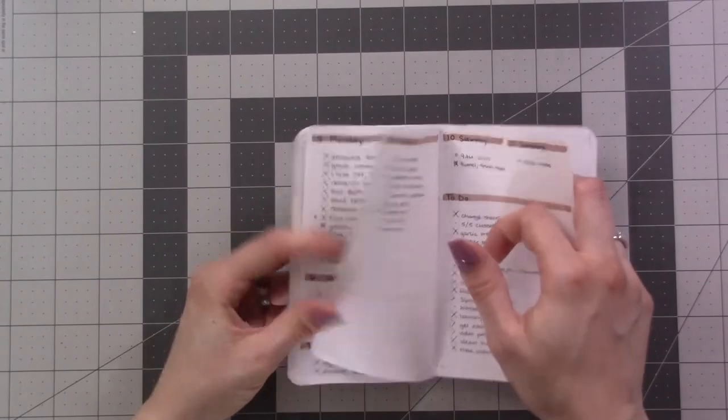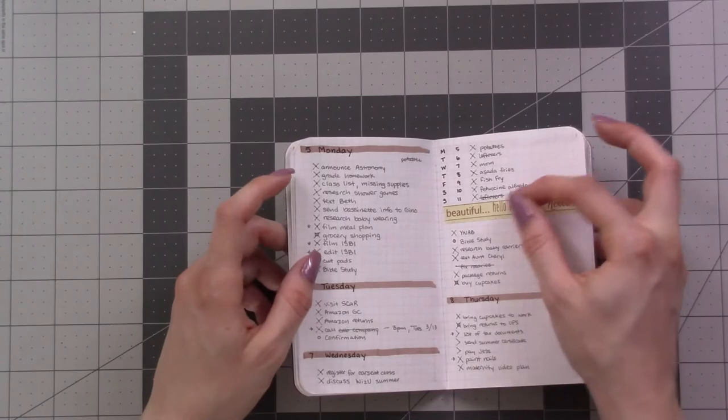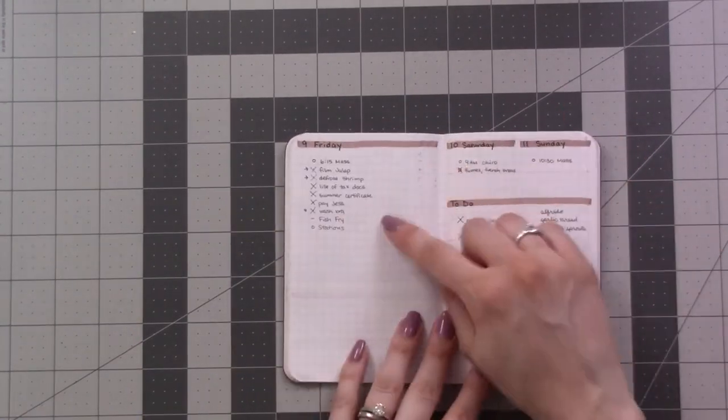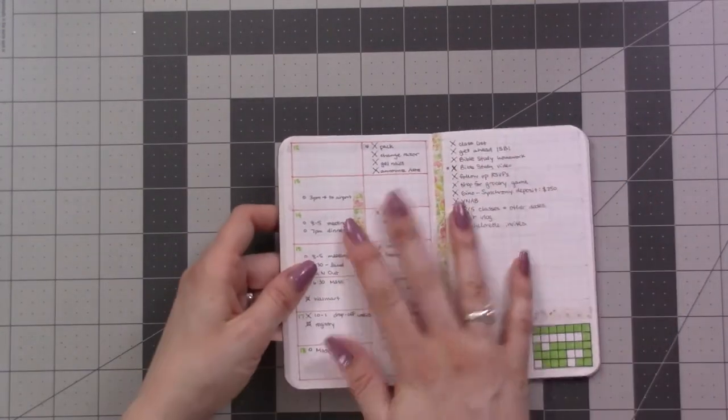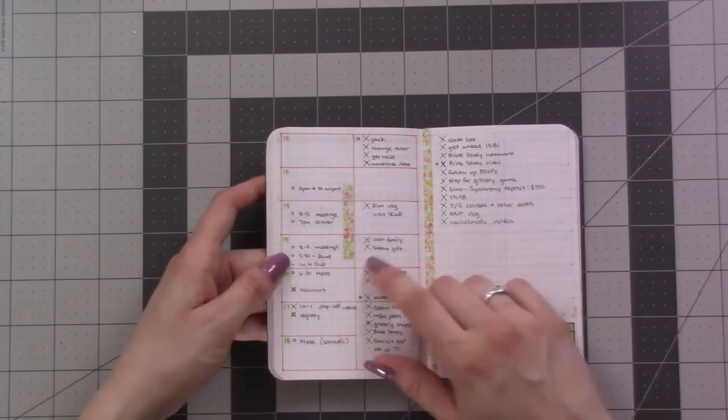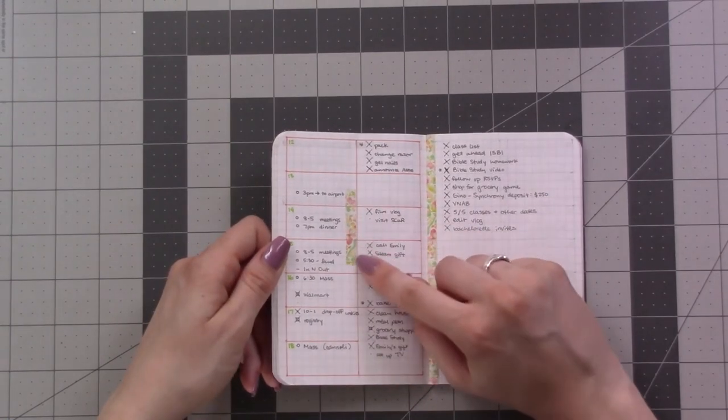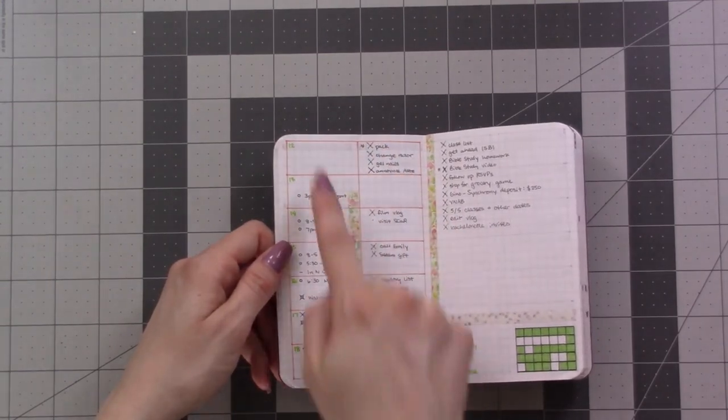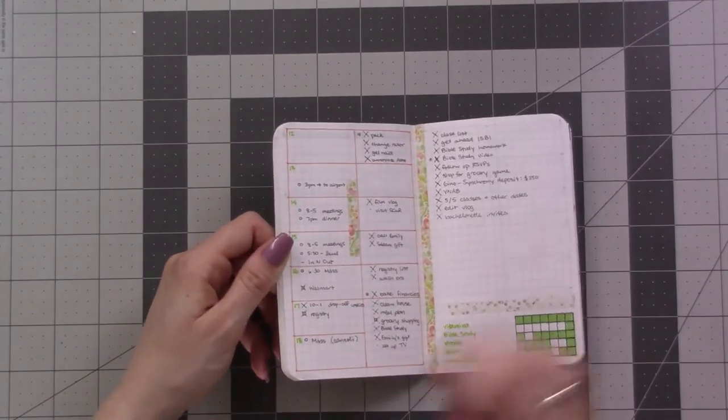I'm pretty much pretty consistently using a check box for an errand and just a dot for just a general to-do around the house. Then this week is the week that everything went crazy. Well, not crazy, I just used a different layout. This is the week that I went to Las Vegas for a work trip, so this strip of washi tape shows when I was out of town.